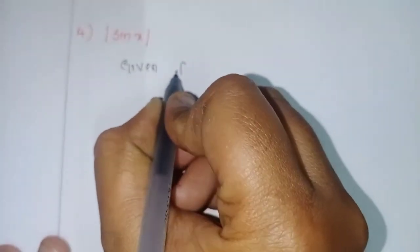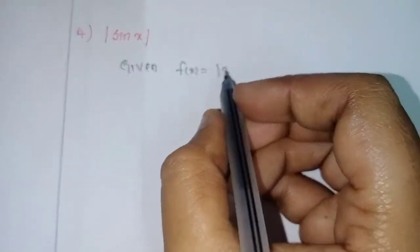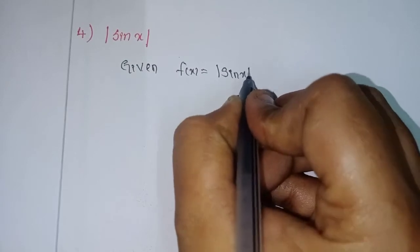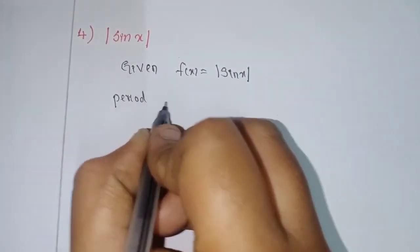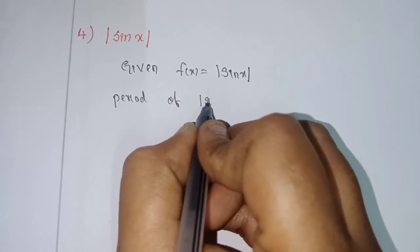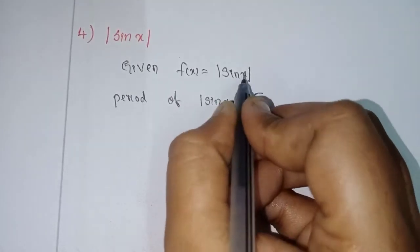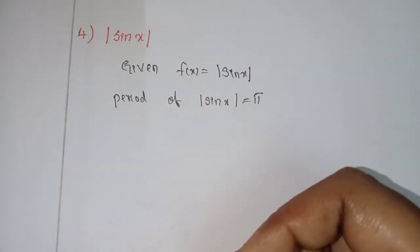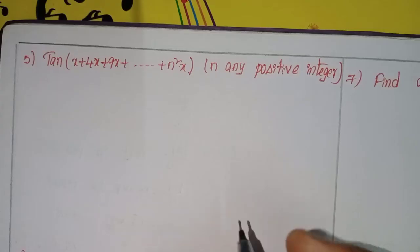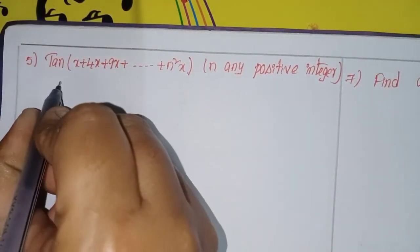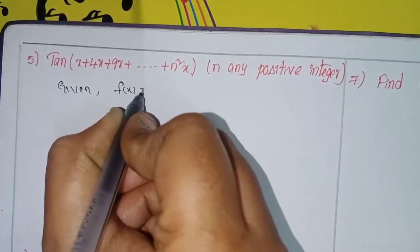Next given function: f(x) = |sin x|. The period of |sin x| equals π.